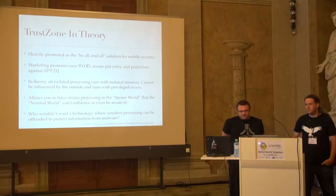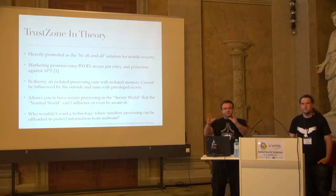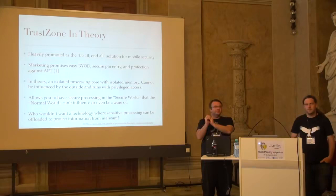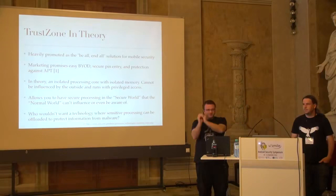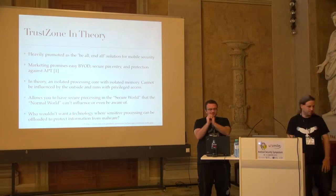TrustZone is hyped as: let's take something we wished was all secure - an Android phone and a Linux kernel - and accept that it's not going to be fully secure. So let's do something else that's going to be secure: another operating system running on the same chip in its own little box. Just pretend that if we couldn't secure this big thing, maybe we can secure this little thing. And in theory we can. But this little thing is only secure when we know all the code that's running in it and we trust all the code that's running in it.